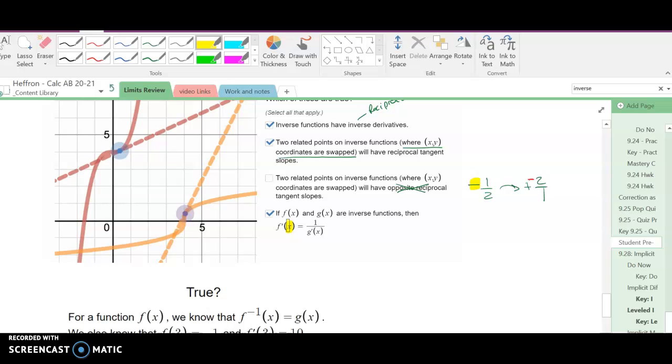The derivative of f at x. Let's say this is the point one half comma one, two, three, four. We'll have, will be one over the derivative at g prime, but not at x. Notice this would be the point four comma one half. So in here we would have to say g prime at f of x.